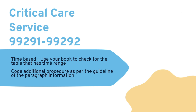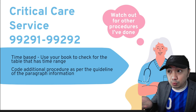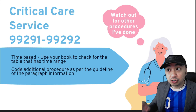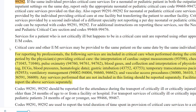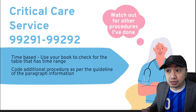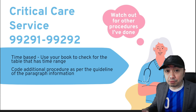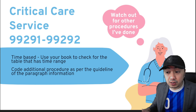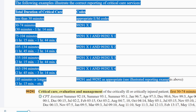Critical care service uses codes 99291 and 99292. Watch out for other procedures performed alongside critical care — there is a paragraph in the guidelines listing procedures that cannot be coded in conjunction with critical care service. Critical care is not hard to code because it's time-based. Be aware that if the time is not exactly 30 minutes or one hour, there is a table you can use to determine the correct code.